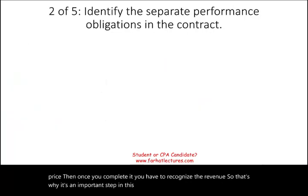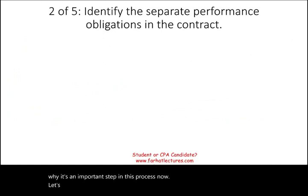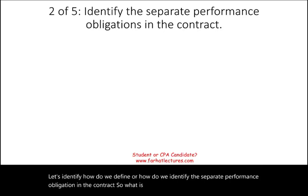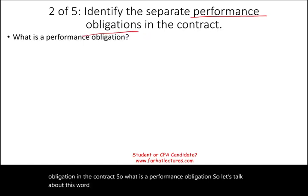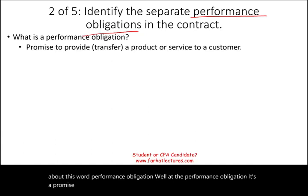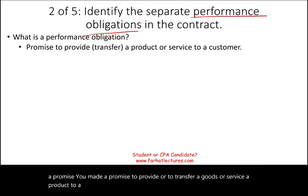Now, let's identify how we define or identify the separate performance obligation in the contract. What is a performance obligation? It's a promise — you made a promise to provide or to transfer goods or a service, a product, to a customer. That's your obligation. That's your performance obligation.